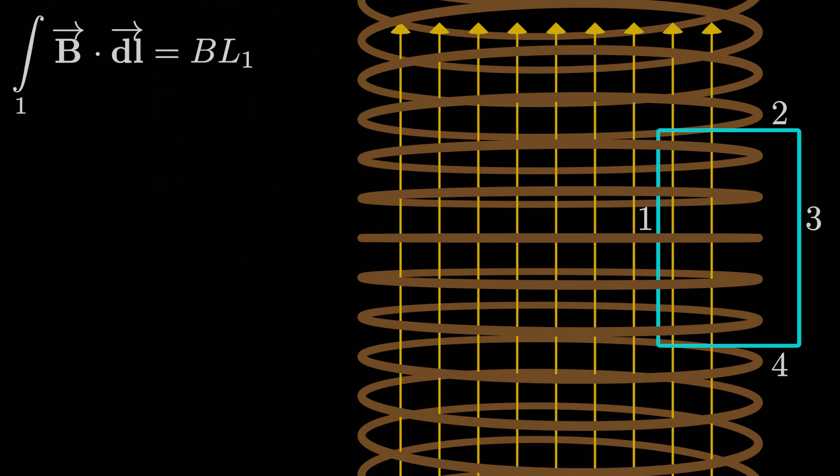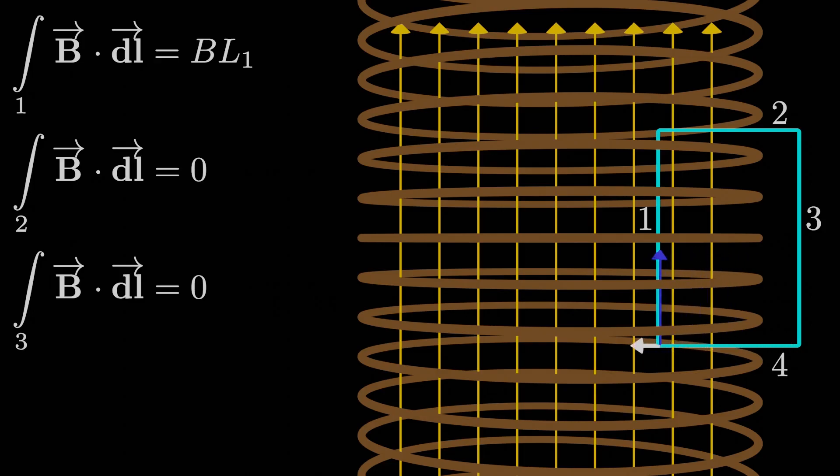As for the second segment, since the magnetic field is perpendicular to the segment inside the solenoid, and virtually zero outside the solenoid, the integration just ends up being zero, because of course the dot product of two perpendicular vectors is zero. For the third segment, again, since we're taking B equals zero outside the solenoid, the integration along the third segment is zero. That was easy enough. The fourth segment is the same story as the second segment. I'll let you fill in the details, but the integration ends up being zero for that one as well.